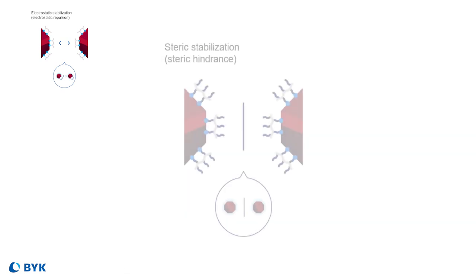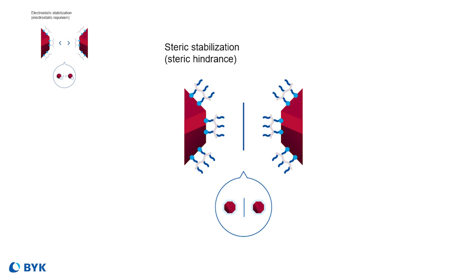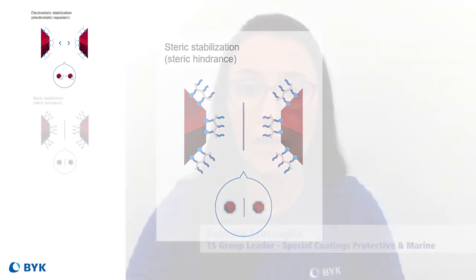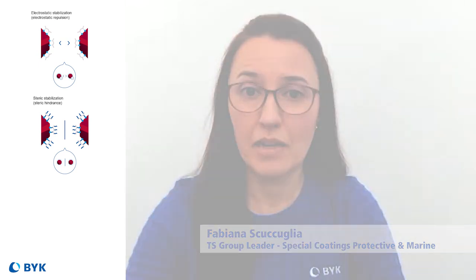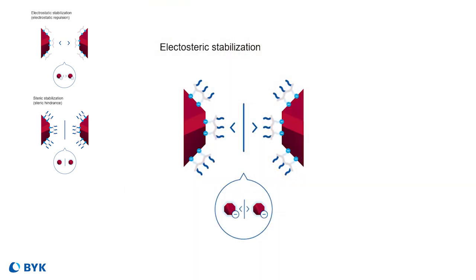This mechanism is generally more effective in aqueous systems. The second mechanism is steric stabilization. Steric stabilization is a factor of the bulkiness of the molecule — you have a pigment-affinic group and a resin or solvent-affinic group, and the large chains and bulkiness of the wetting and dispersing molecule prevent the primary particles from reaching each other. And lastly, the third mechanism is a combination of the two, and we call this electrosteric stabilization.